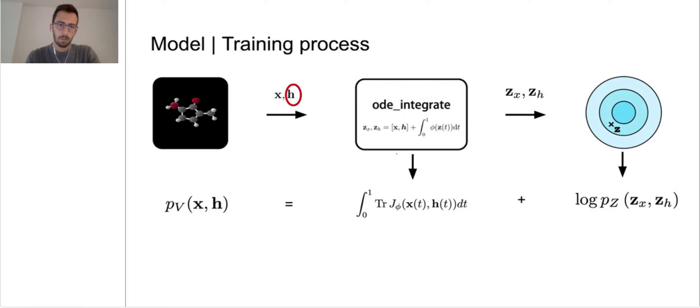Additionally, some of the node features h are discrete, for example the atom types. But normalizing flows require continuous and differentiable variables. Therefore, we have to dequantize them before the ODE function.